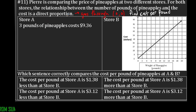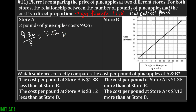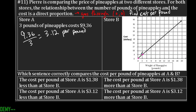Finding the cost per pound is just like finding the slope — we want the dollar amount for every one pound. For store A, if three pounds costs $9.36, we take 9.36 divided by three to get our rate, which is $3.12 per pound. For store B, the graph goes through the point (2, 9), meaning nine dollars for every two pounds. Nine divided by two is $4.50 per pound.